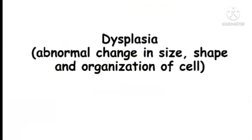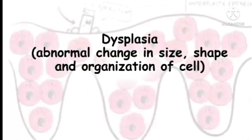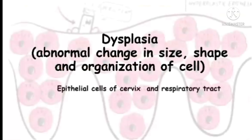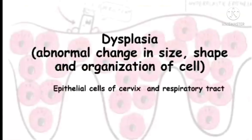Dysplasia is the abnormal change in size, shape, and organization of the cell. The examples of dysplasia include epithelial cells of the cervix and respiratory tract, and it is very common in these two locations.